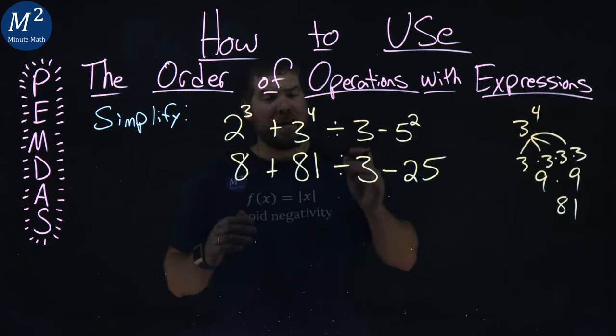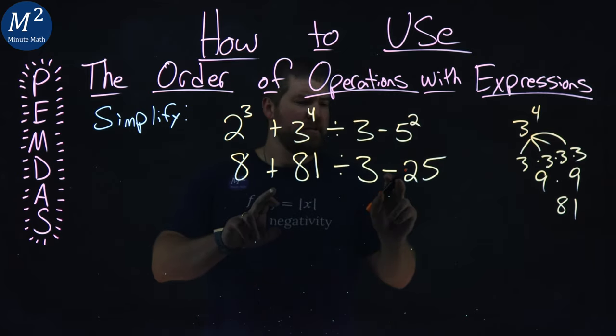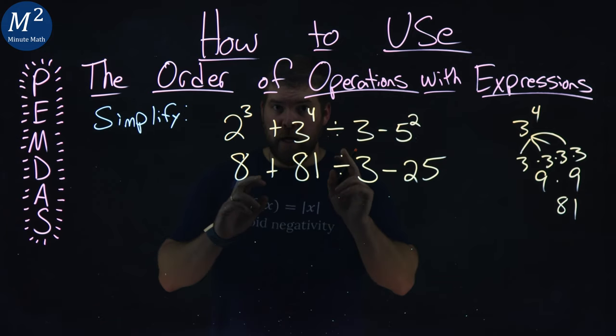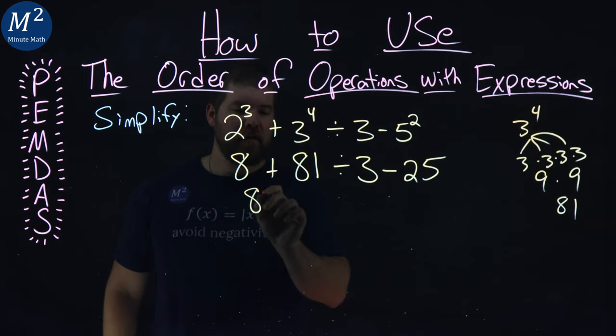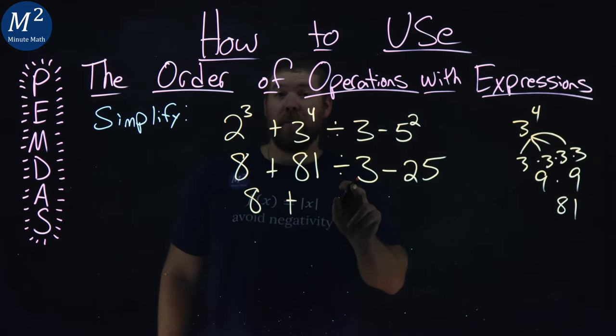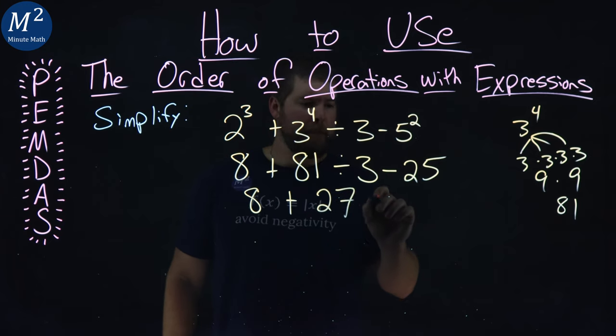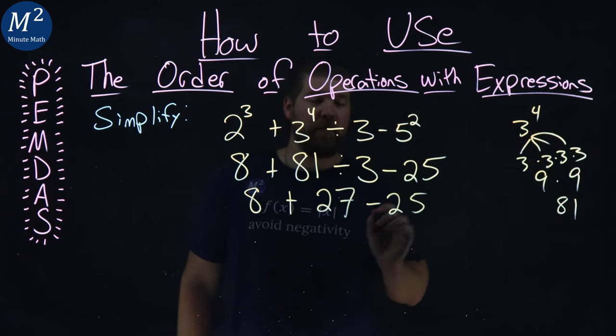Anyway, segue over back to the problem. We have addition, subtraction, and division. Division comes next in our order of operations here. So we have an 8 plus 81 divided by 3 is a 27 minus a 25 here.